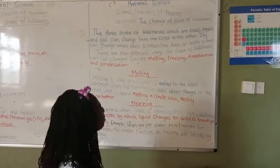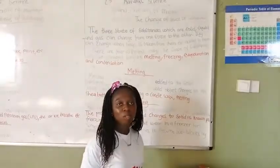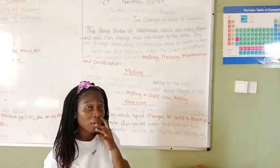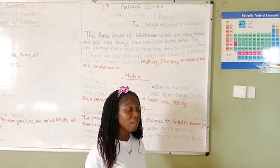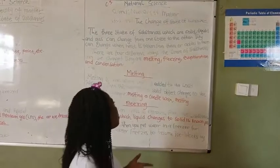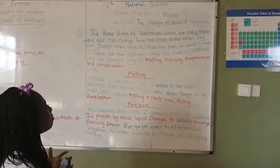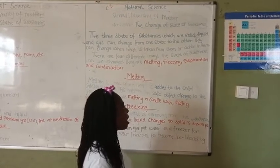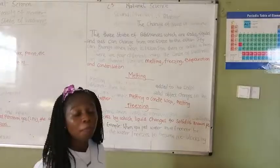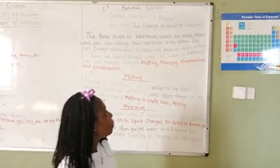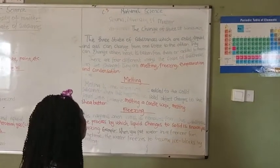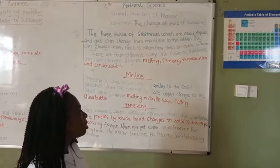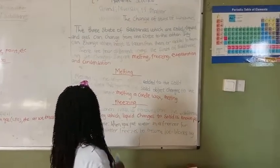There are four different ways that substances can be changed. The first one is melting, then we have freezing, evaporation, and condensation.